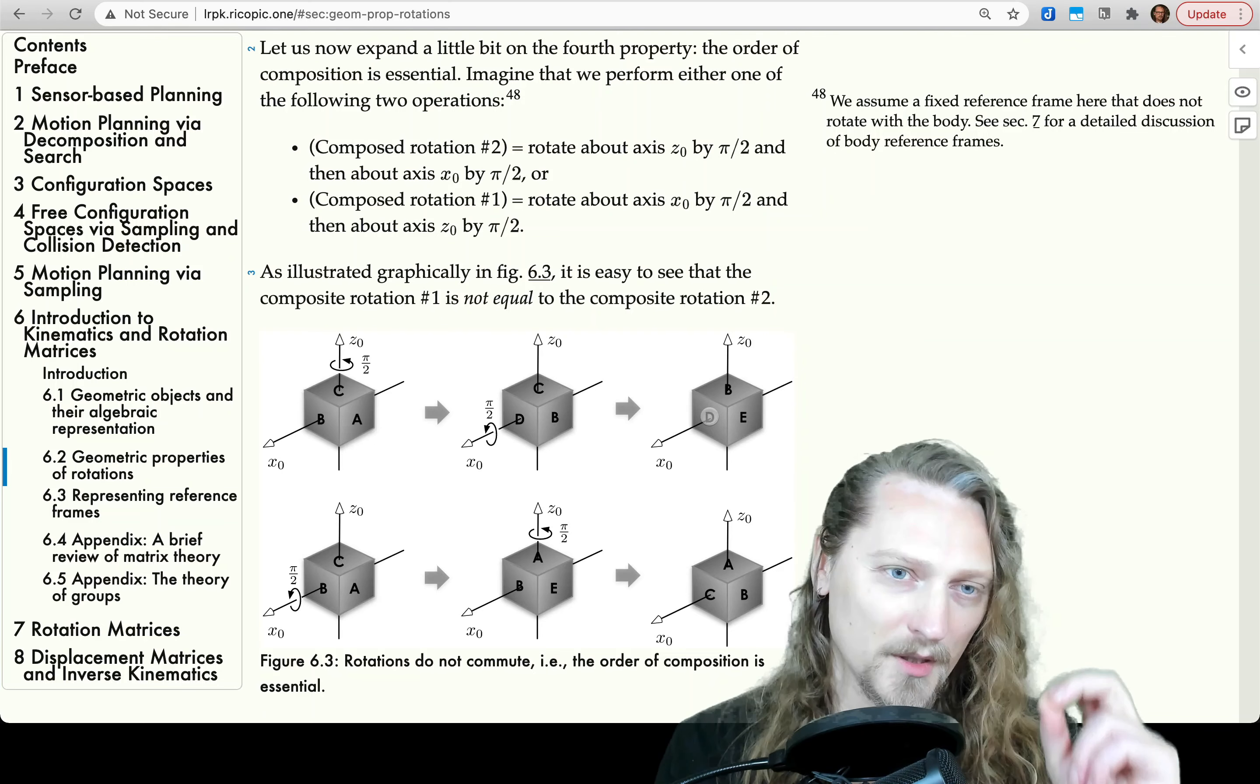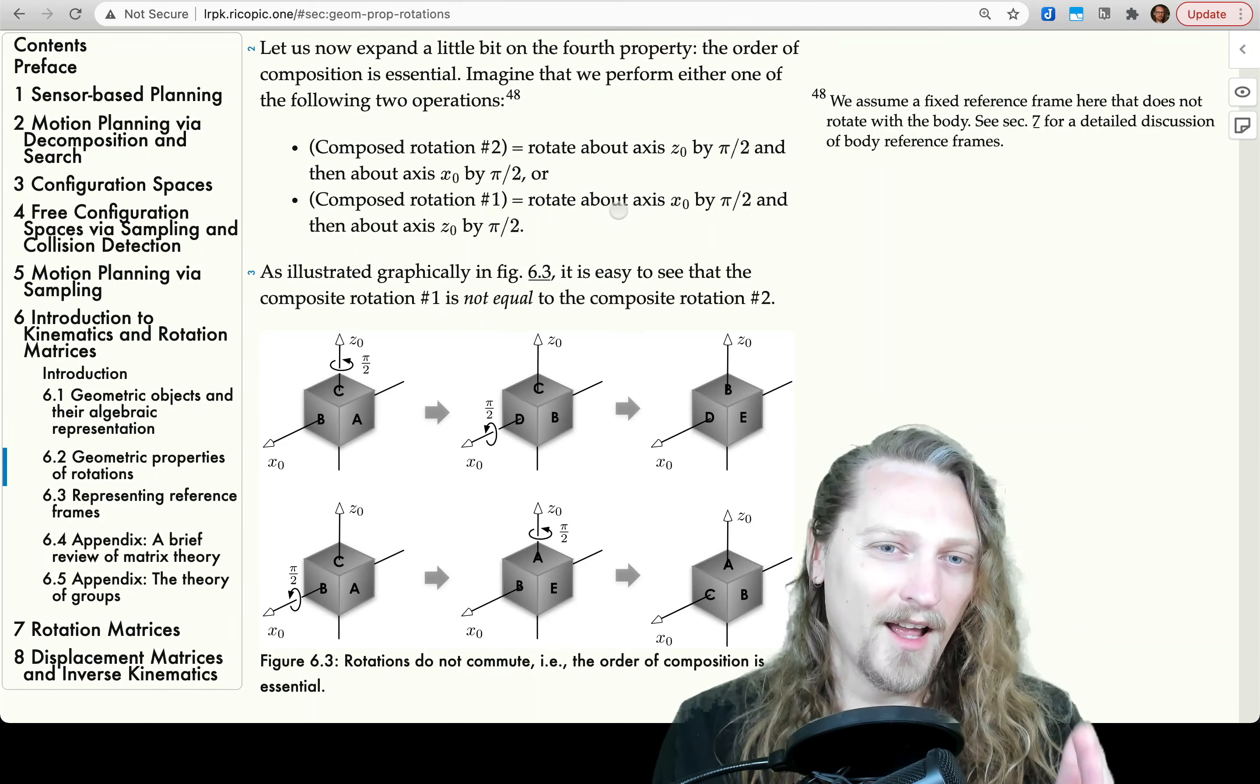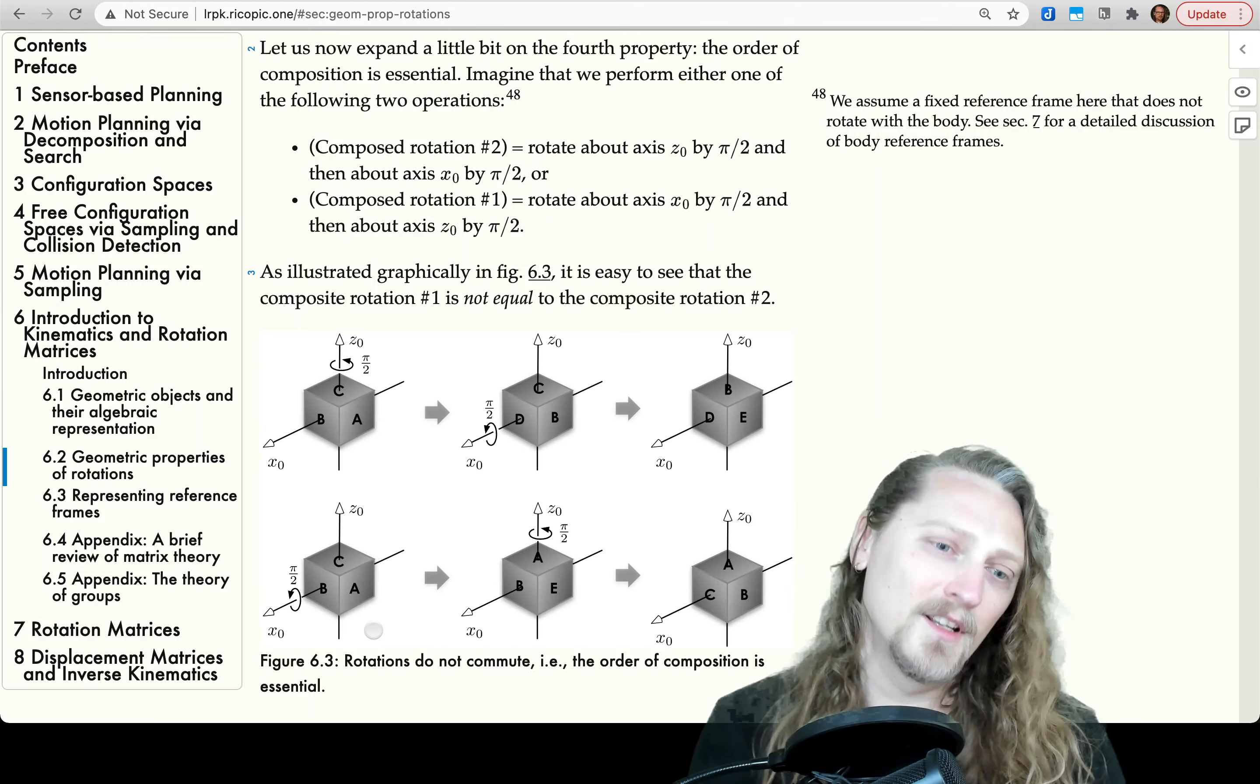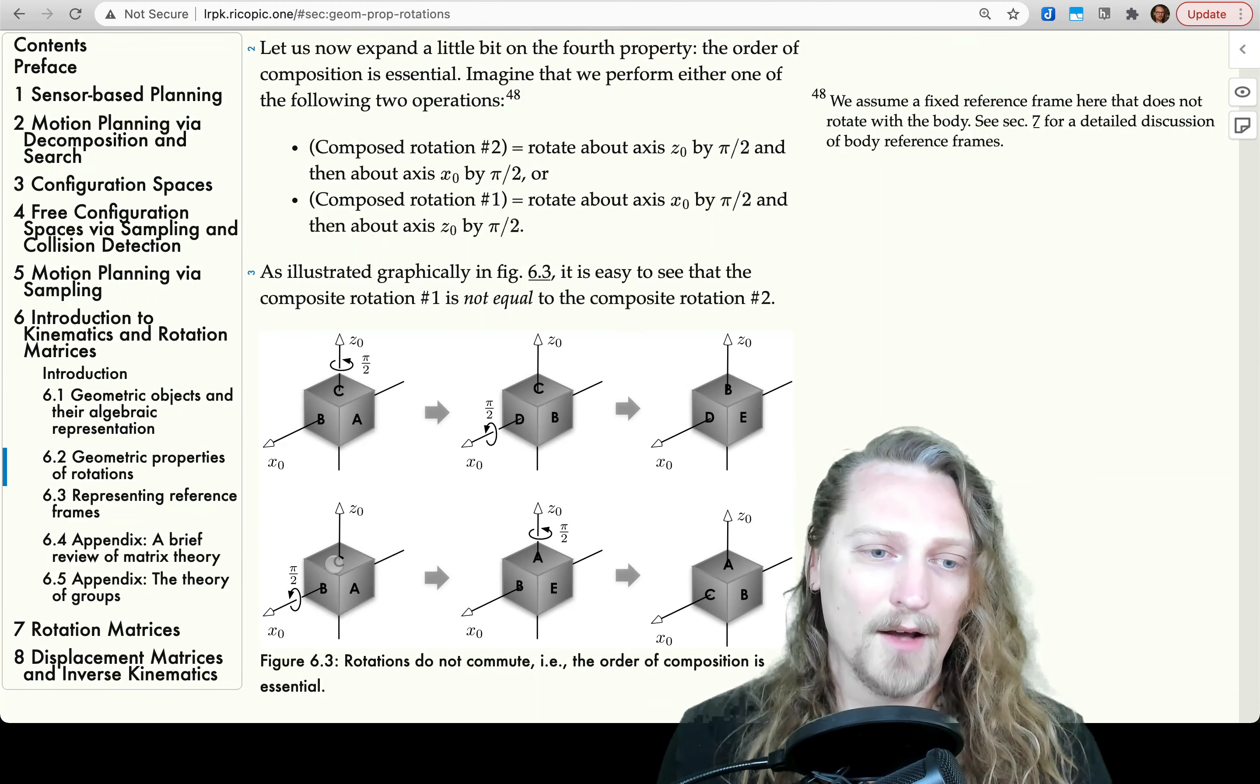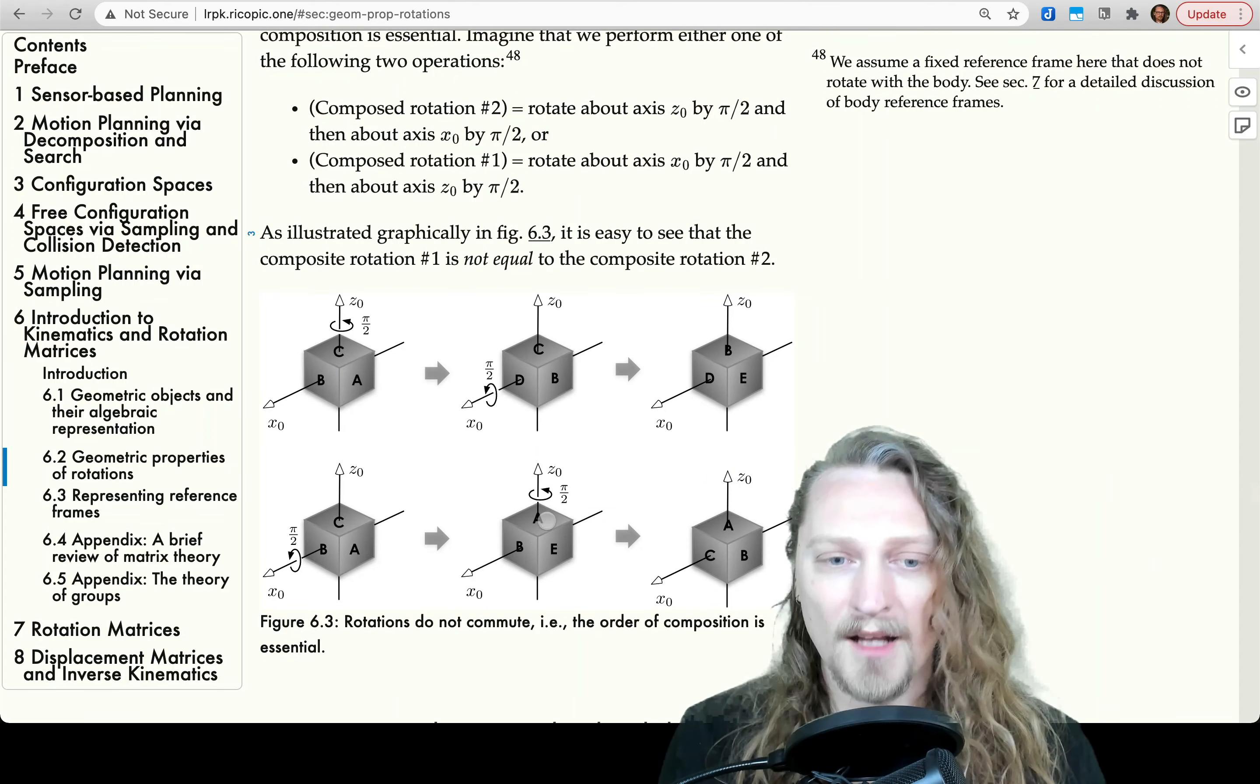So, positive pi over 2 rotation about x0 is a rotation this way. So, we will see b become the top of the cube now. E was on the bottom in this figure and now it is on the right hand side. D, the face that was already on the left, will again be on the left, although its orientation has changed. Okay. So, that was composed rotation number 2, we call it. Composed rotation number 1, trying to really be confusing here. As confusing as possible. Keep out the business majors. So, rotate about axis x0 by pi over 2. So, x0 is this axis right here. So, we rotate about it by pi over 2.